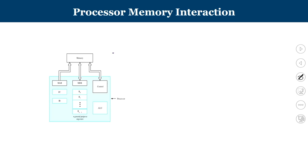The processor consists of multiple general-purpose registers, temporarily used for carrying out operations and storing operand values. There is an ALU and a control unit that exchanges signals between processor and memory. There are also two important registers: the program counter, which contains the address of the next instruction to be fetched and executed, and the instruction register, which performs the decoding operation.